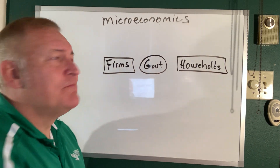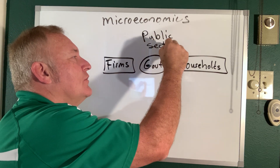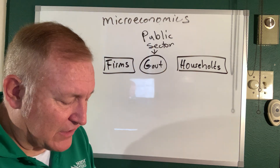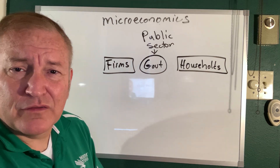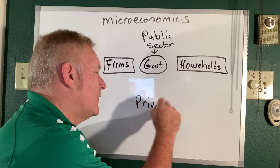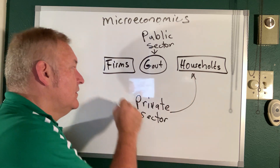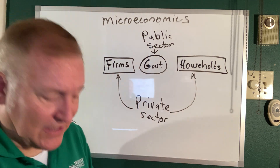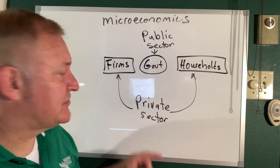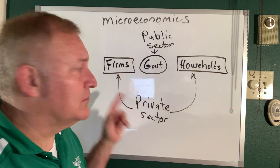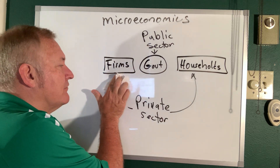Perhaps you've heard the term 'public sector.' In economics, the term public sector almost always refers to the government. Versus maybe you've heard the term 'private sector.' The private sector comprises firms and households. So public sector is always government; private sector includes the business sector or firms, and then households or consumers.